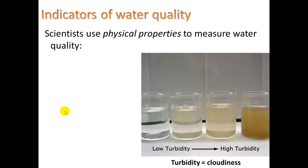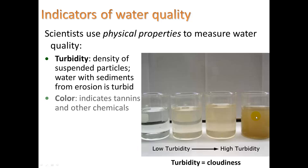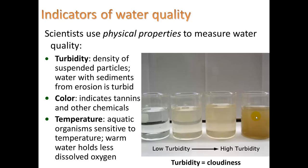For physical properties, scientists look at turbidity — the density of suspended particles. Water with sediments from erosion is turbid, meaning cloudy, which is not desirable. They also look at color, which can indicate tannins and other chemicals (tannins are natural compounds that also give tea its color). And they look at temperature, since aquatic organisms are sensitive to it and warm water holds less dissolved oxygen.